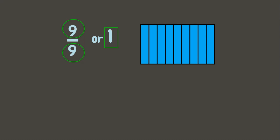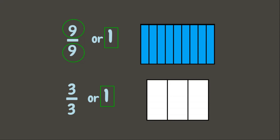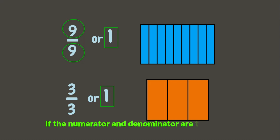Let's have another one — three-thirds. Because the numerator and the denominator are the same, this fraction equals one. A whole divided into three equal parts where three parts are taken is one whole. Remember, if the numerator and denominator are the same, the fraction is equal to one.